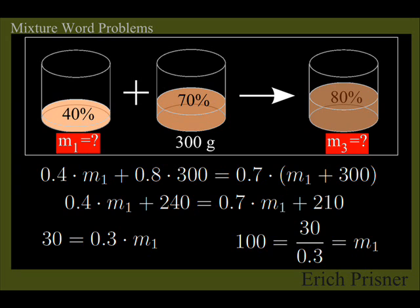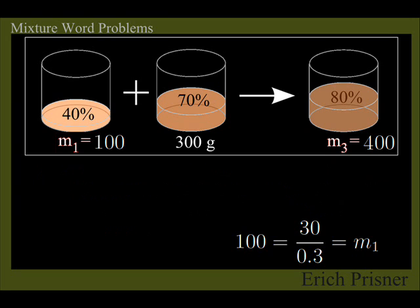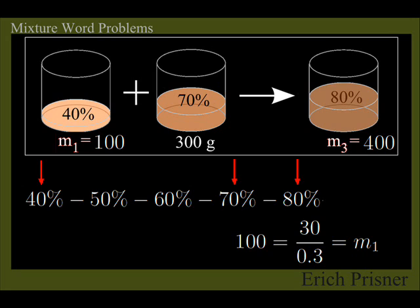Again, you may have guessed this already using the trick I showed you in the 3 and a half minutes above. The distances of 0.7 to 0.4 and 0.8 are 0.3 and 0.1, therefore the masses must behave like 1 to 3, 100 mg to 300 mg.